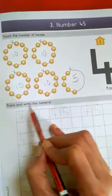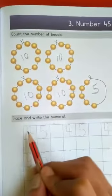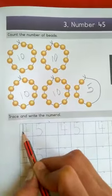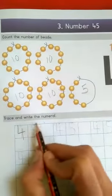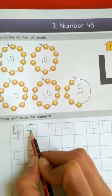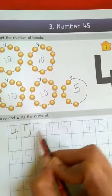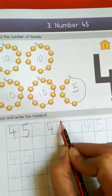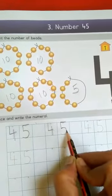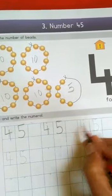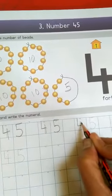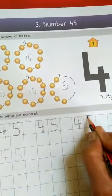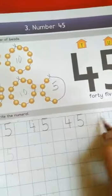Now, trace and write the numeral. Just trace it, say and trace. 4, 5, 45. Leave this box, leave this box, and write here. 4, 5, 45. Leave this box, write here. 4, 5, 45.